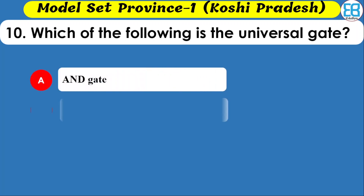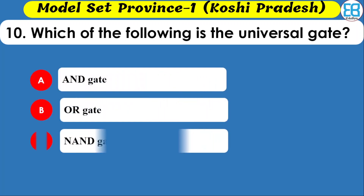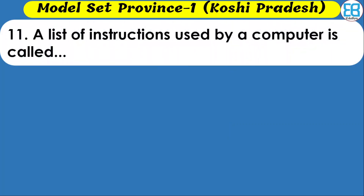The correct option for universal gate is NAND gate. Both NAND and NOR are universal gates, but the answer here is NAND gate.